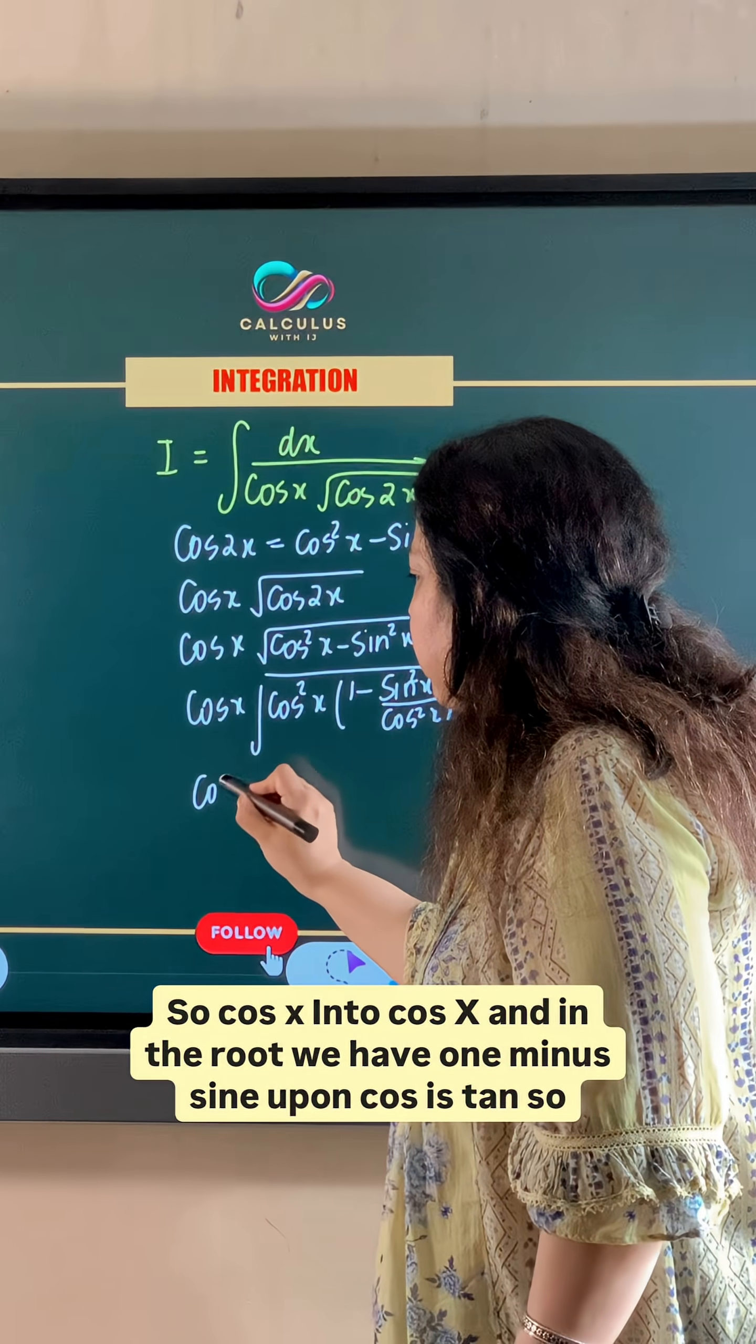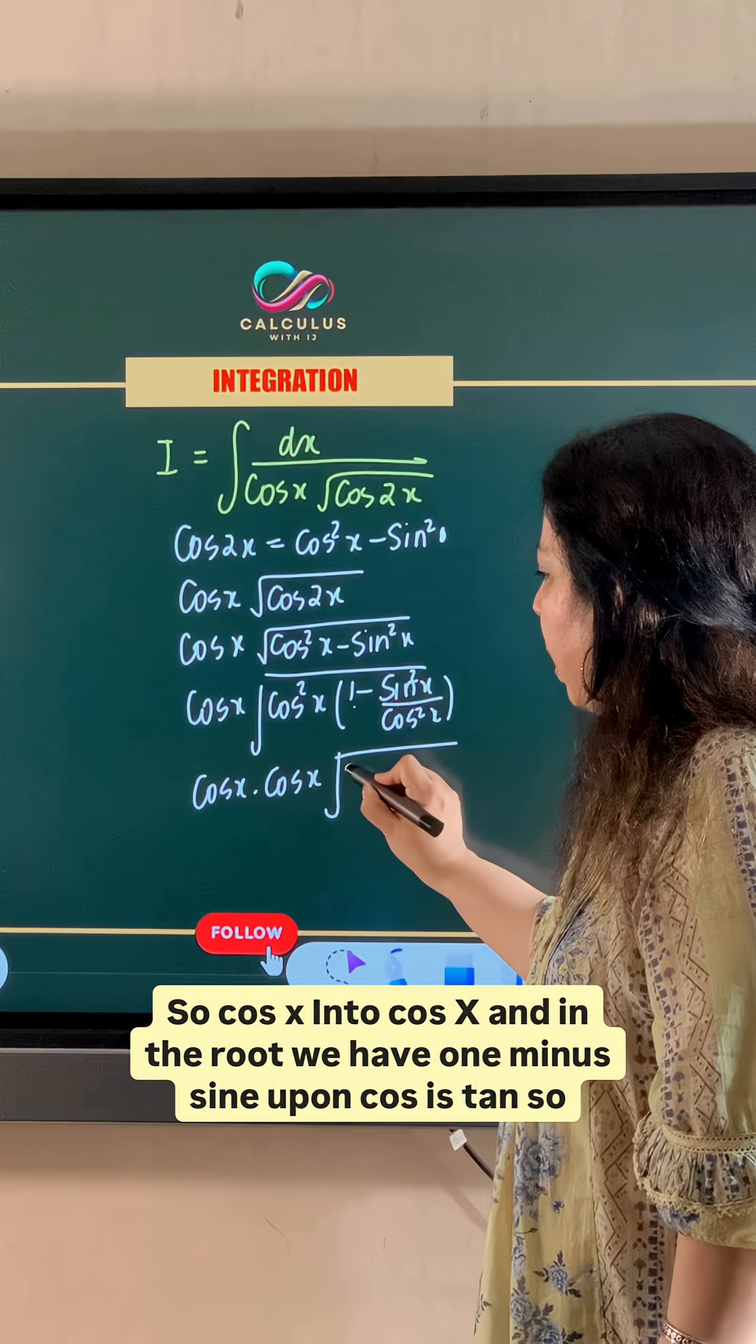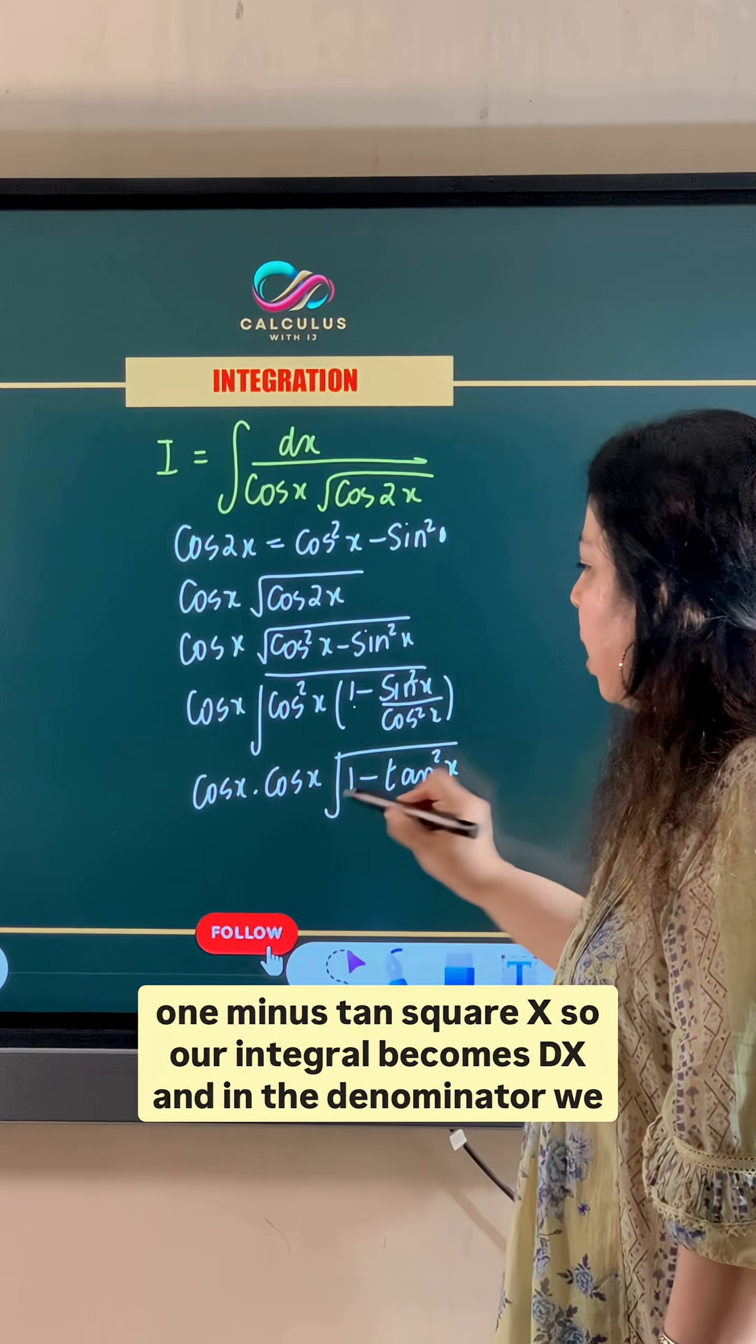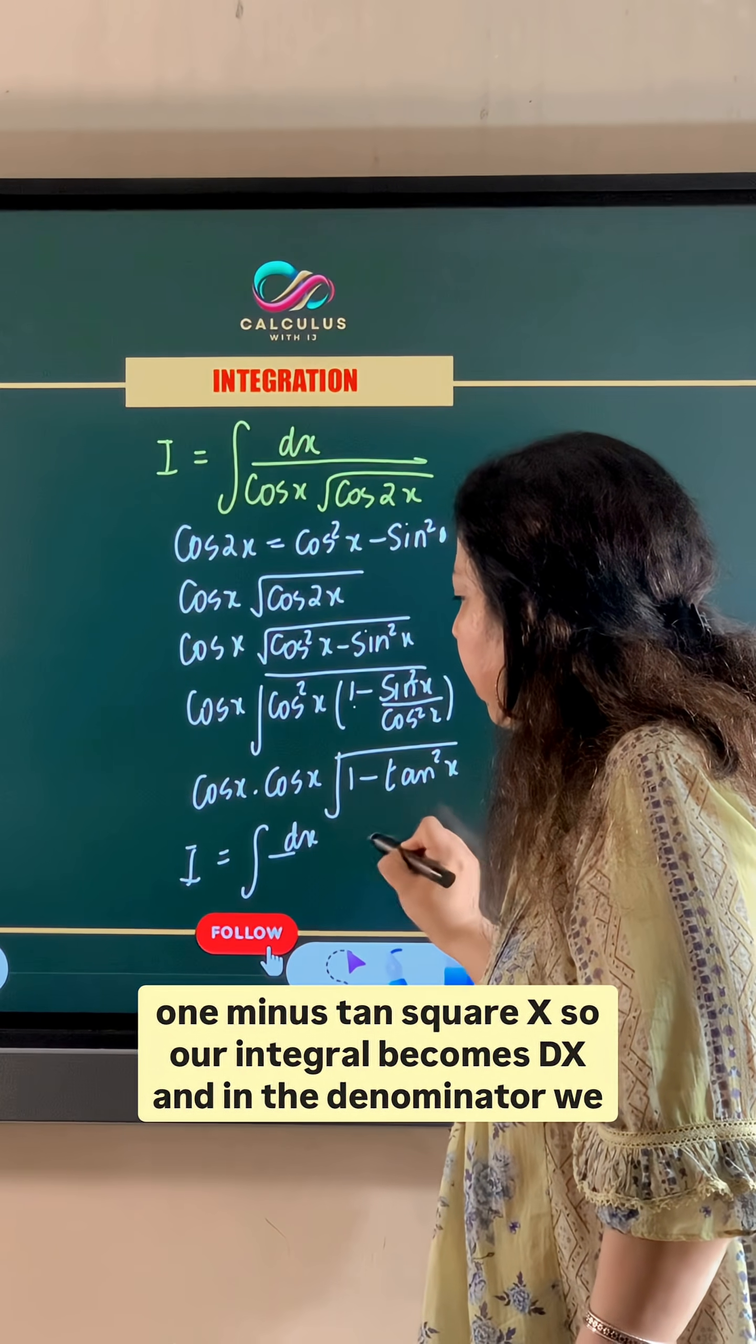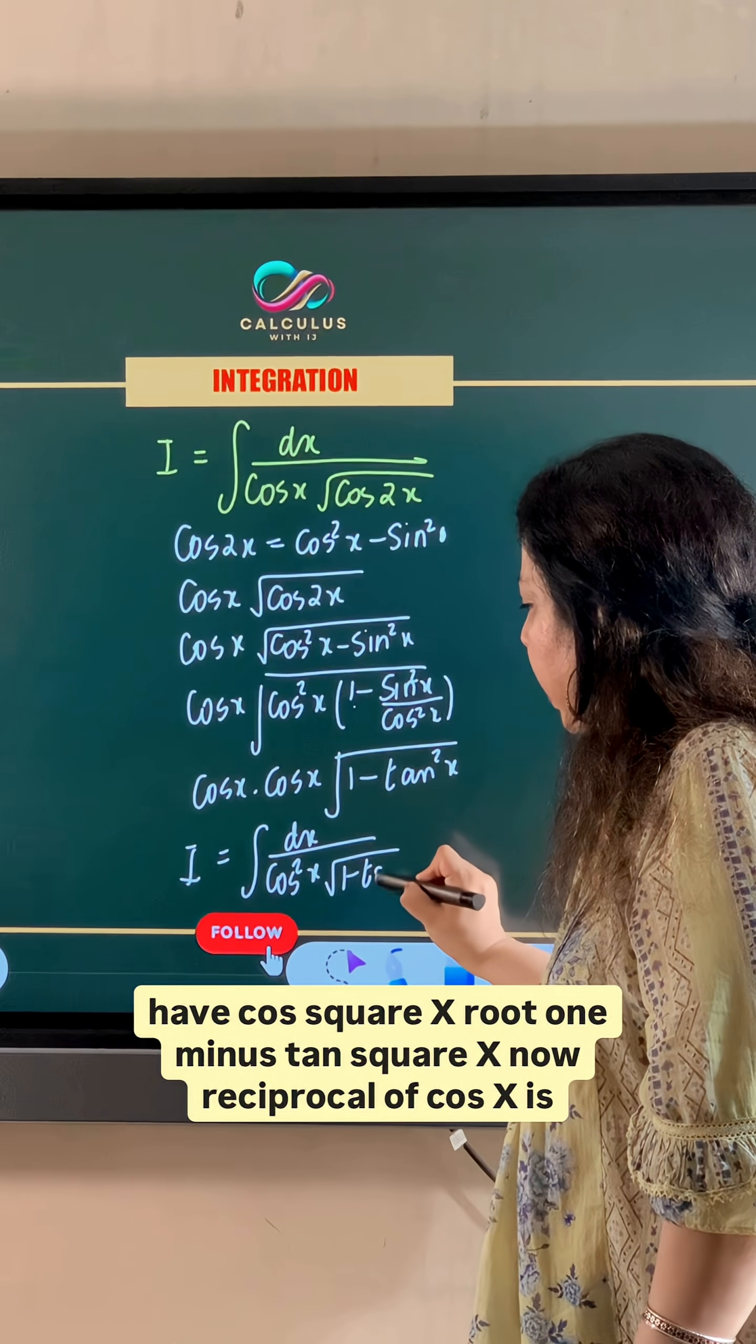So cos x into cos x and in the root we have 1 minus sin upon cos is tan, so 1 minus tan square x. So our integral becomes dx and in the denominator we have cos square x root 1 minus tan square x.